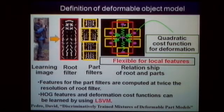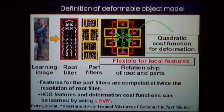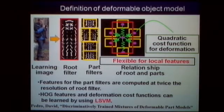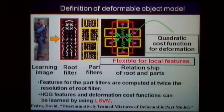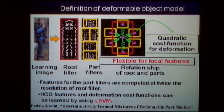I will define the deformable object model using training images — in this case, not a person model but a vehicle model. The root filter and part filters are constructed. The root filter corresponds to the whole body, and the part filters correspond to characteristic parts such as the head, arms, or legs. Features for the part filters are computed at twice the resolution of the root filter, and the part filters are connected to the root filter by springs.